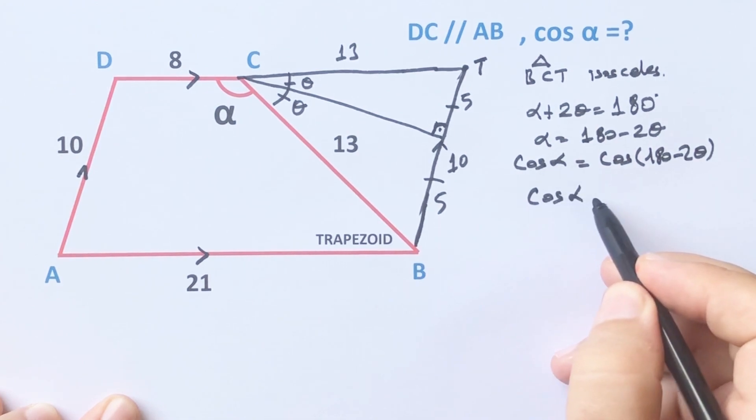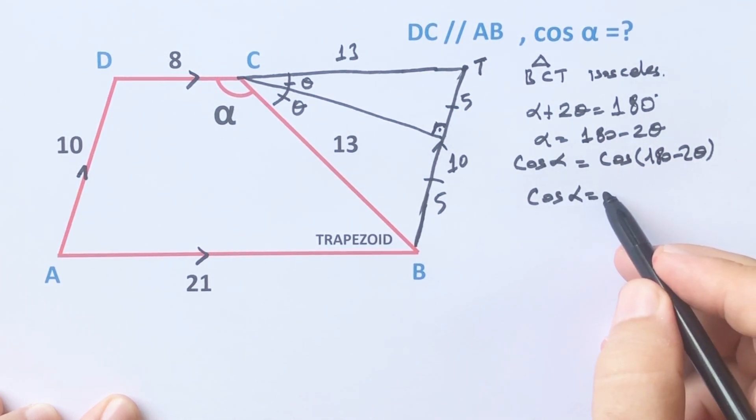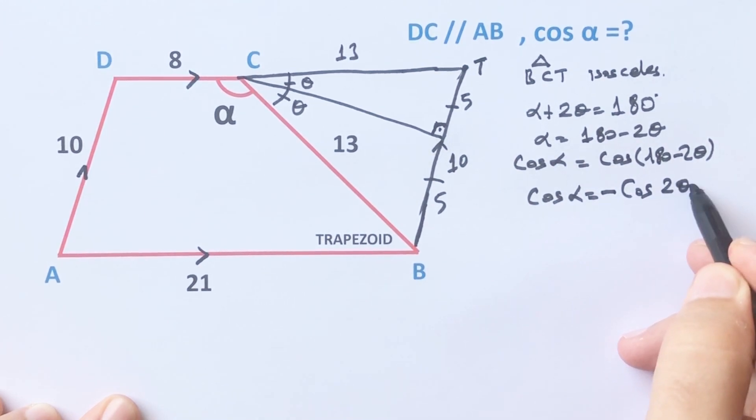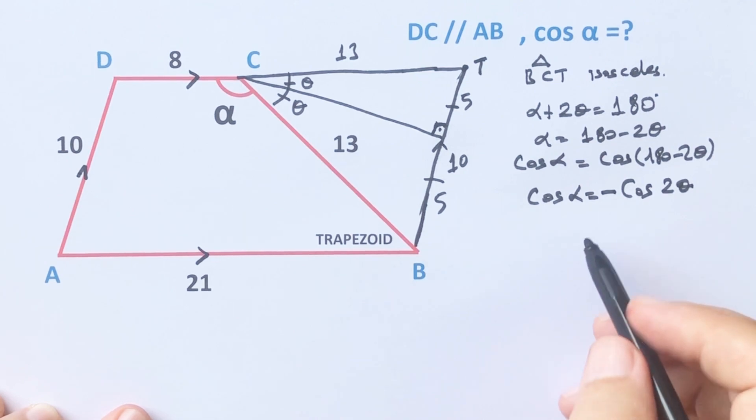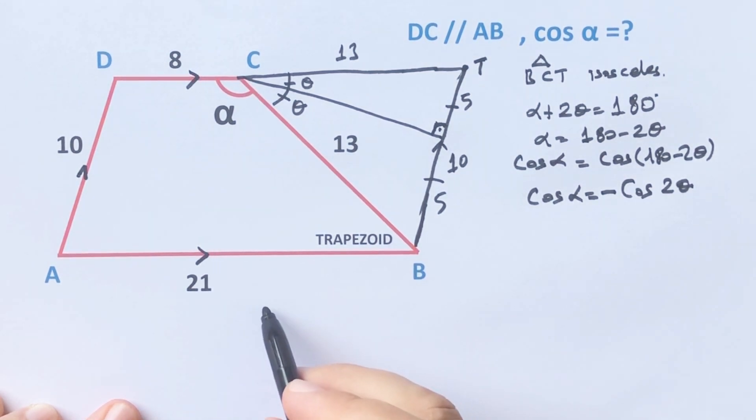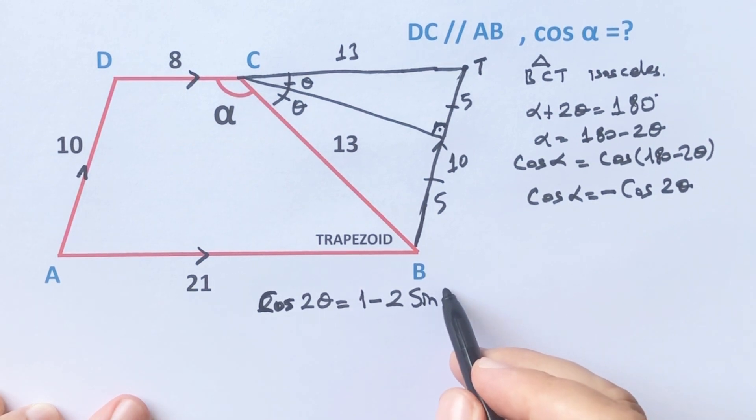Cosine alpha must be equal to negative cosine 2 theta, right. Okay, let's remind you the expansion of cosine 2 theta. Cosine 2 theta equals 1 minus 2 times sine squared theta.